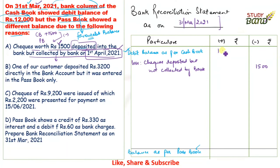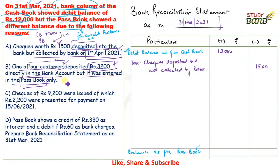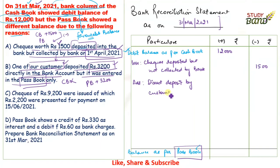Second adjustment: a customer deposited rupees 3,200 directly into the bank account, but it was recorded in the pass book only. This means the pass book was credited with 3,200 but it was never entered in our cash book. Since we are arriving at the pass book balance, and the pass book added it, we also add it. Add — direct deposit by customer = rupees 3,200.